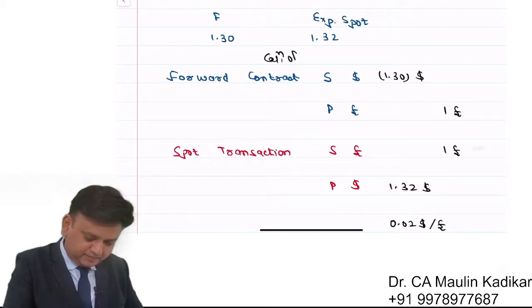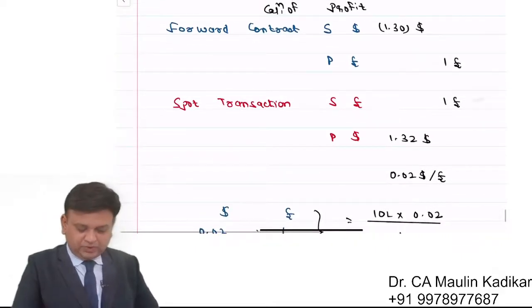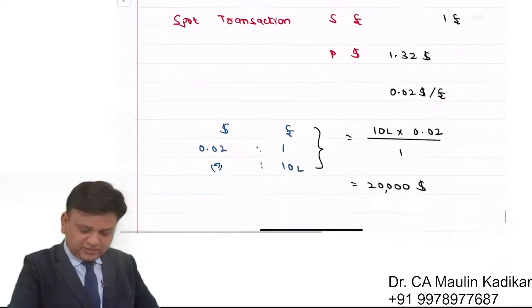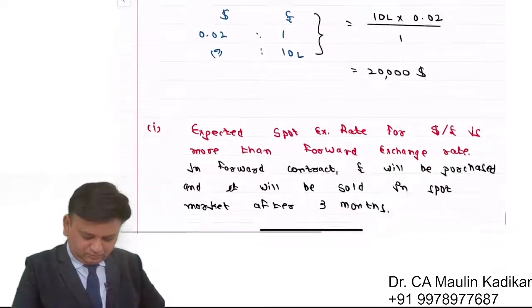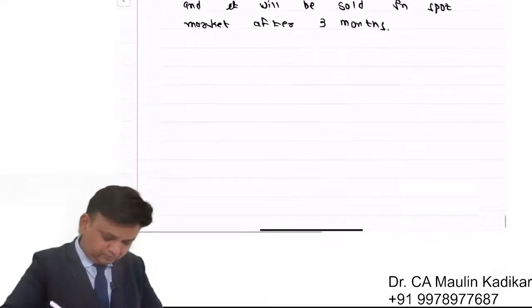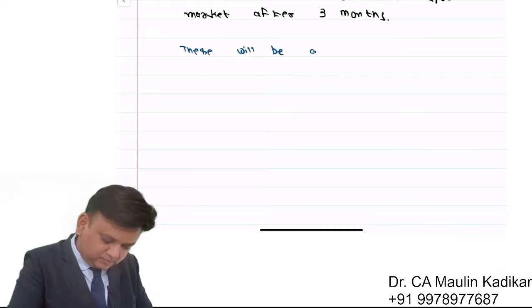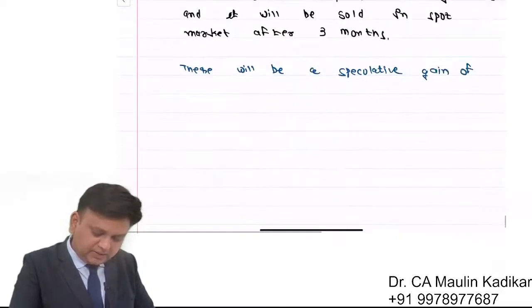Calculation of profit: The speculative gain is £1,000,000 × $0.02 = $20,000 USD. There will be a speculative gain of $20,000 USD.